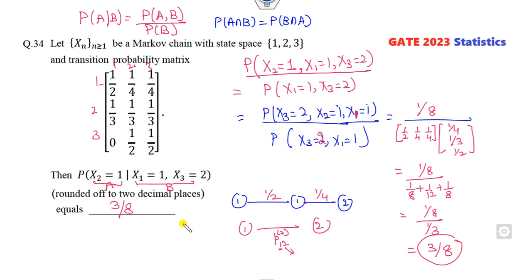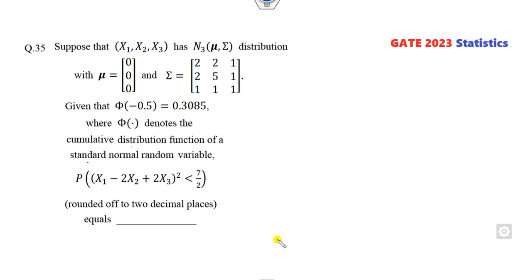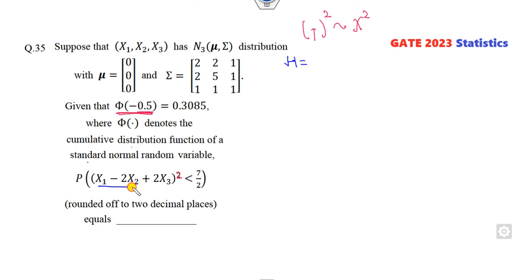The right answer is 3/8. Remember: the time period from step 1 to step 3 is 2 periods, so you use the 2-step transition. Now look at the next question — X_i's are given as multivariate. Again you see a square, so you might think to convert to chi-square distribution. However, it is given as a normal distribution, so we can't directly use chi-square or we won't get the right answer. Take the quantity h equals X_1 minus 2X_2 plus 2X_3, then find the mean and variance of h.